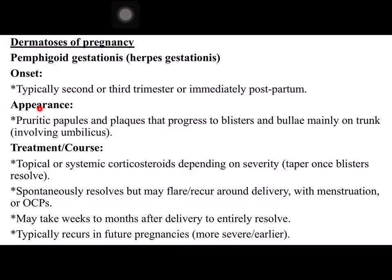Regarding the clinical picture, it may present with pruritic papules and plaques that may progress to blisters and bullae, mainly on the trunk, involving the umbilicus. It is an important point to separate this dermatosis from others that came later, as this one involves the umbilicus. Treatment is with topical or systemic steroids depending on severity, tapering — that is, decreasing the dose of steroid gradually — once blisters resolve.